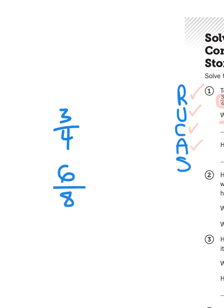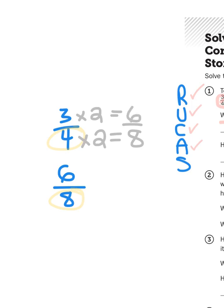These two fractions have unlike denominators — they are not alike. But when I look at these two denominators, I quickly realize that four is a factor of eight, because eight is a multiple of four. That means I can multiply four by something to get eight, which means I can convert fourths into eighths. You and I both know that four times two is eight, so to find an equivalent fraction, I multiply the numerator the same way I multiply the denominator. So what's three times two? Six. Six-eighths.